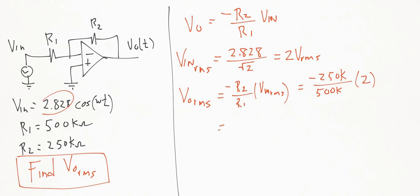And when we do that, 250k divided by 500k gives us a half. So 1 half times 2 gives us negative 1, negative 1 volts.